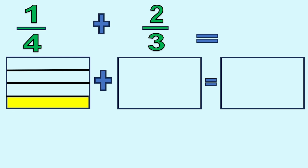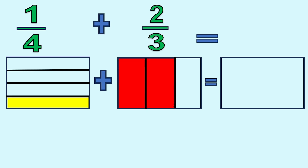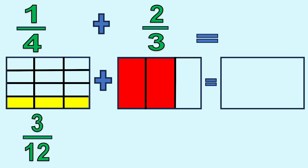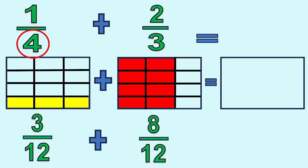Next, the second fraction — let's make vertical lines. Divide the rectangle or model into 3 pieces and shade 2 of these 3. Now, let's cut the first figure again into 3 because the denominator of the other fraction is 3. The figure is now cut into 12 parts, so it becomes 3 twelfths. Now cut the second model again by 4 because the denominator of the first figure is 4. The figure is now cut into 12 parts, so it becomes 8 twelfths.